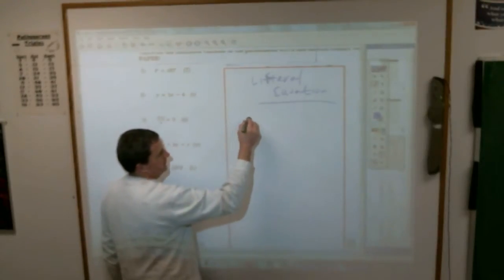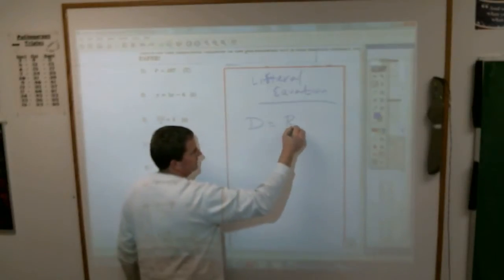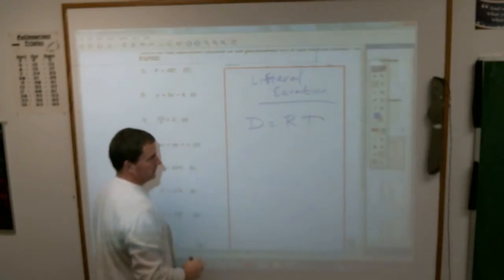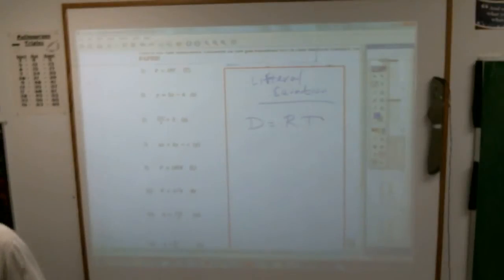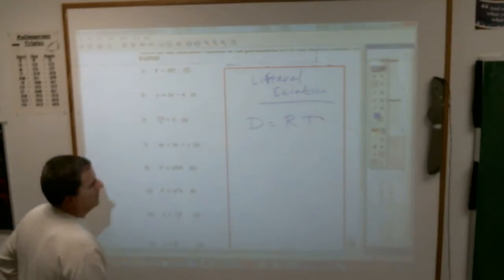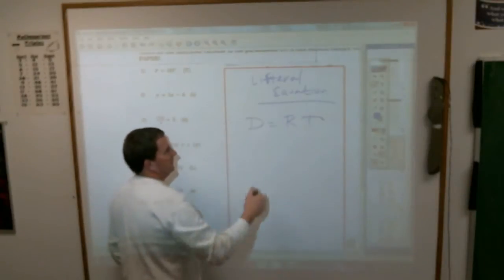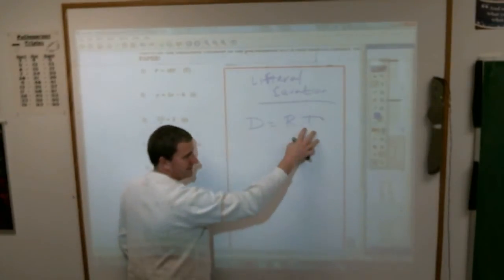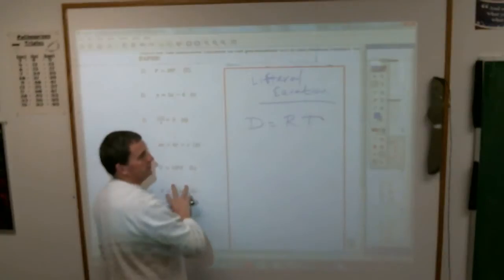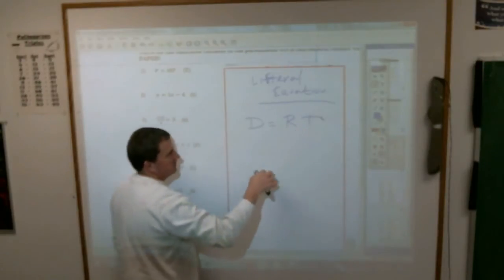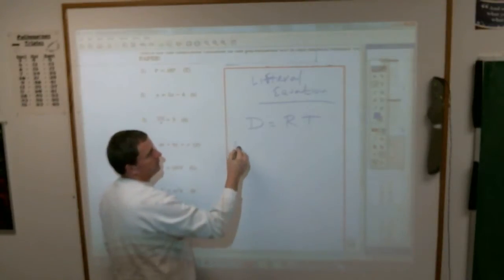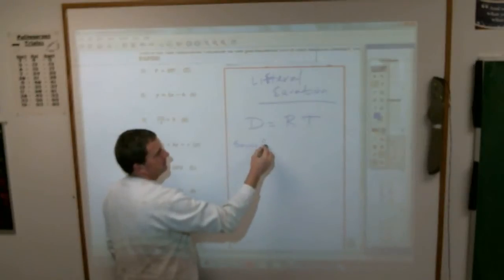The formula for distance: distance equals rate times time, correct? How fast you're going, you're going 20 miles an hour, you go for 5 hours, you went 100 miles. When they talk about this, they want you to take an equation that has a bunch of letters in it and try to rearrange it so that you solve for the letter R.